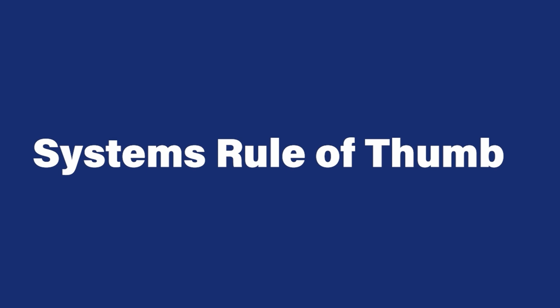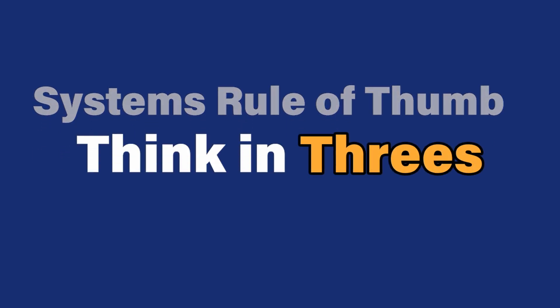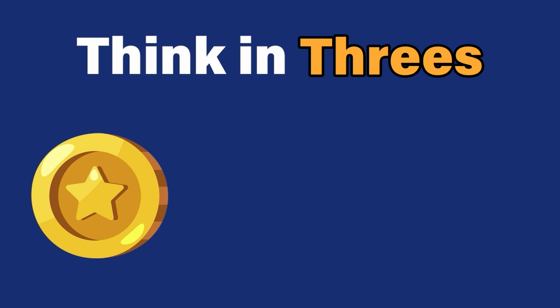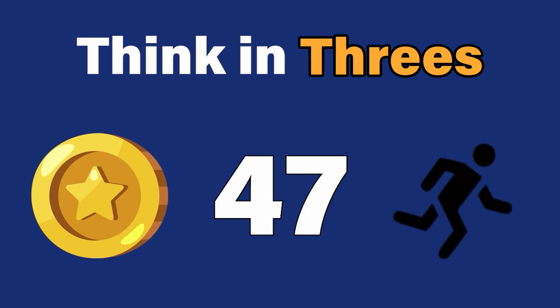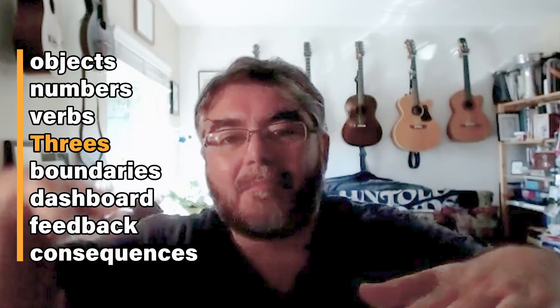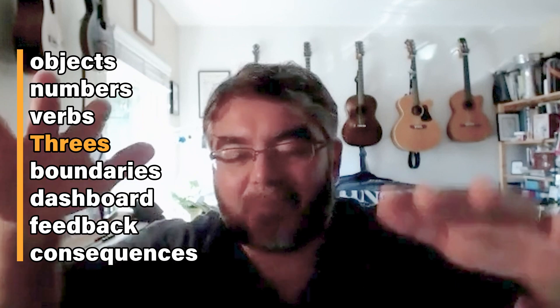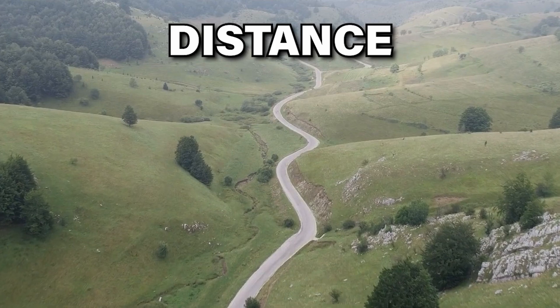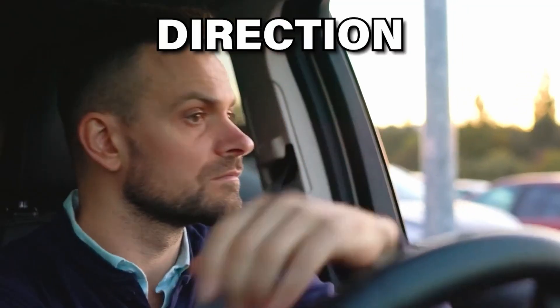Right off the bat, if in your process these lists are long, take a step back. I'll use a rule of thumb here: think in threes. If you have more than three objects, more than three numbers, and more than three verbs, you might be thinking at the wrong level of granularity. It doesn't mean there might not be more in the system, but it means you're trying to boil the ocean. The highest level of a car actually only has: I go from point A to point B, how far along am I, how fast am I going, which direction am I pointing. Three things.